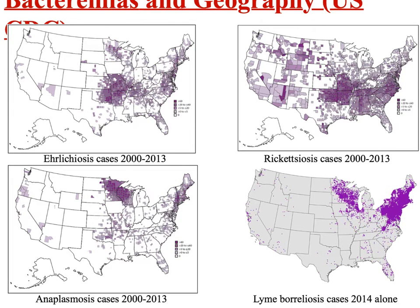Here are four CDC maps showing the geographic distributions and number of cases of Ehrlichia, Rickettsia, Anaplasma, and Borrelia. The Ehrlichiosis, Rickettsiosis, and Anaplasmosis maps span years 2000 to 2013, while the Lyme incidence map is from 2014 alone. Lyme disease is by far the most common of these four infections. Even though these are all tick-borne diseases, they don't have the same geographic distribution — that's related to where their specific tick vector species lives.